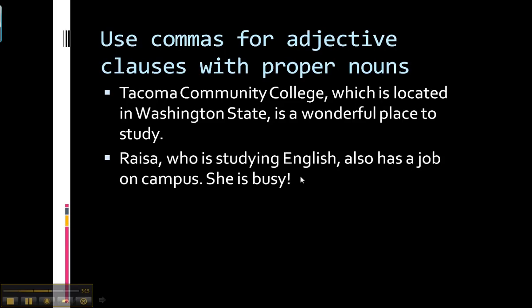Similarly, the second sentence: 'Raisa, who's studying English, also has a job on campus. She's busy.' Here, Raisa is a proper noun, so we all know Raisa and we don't need the information in the adjective clause to understand what the sentence is talking about. So we put commas around it to show that it's extra.